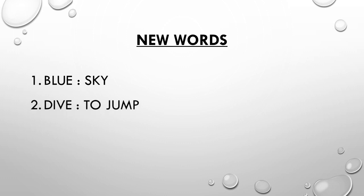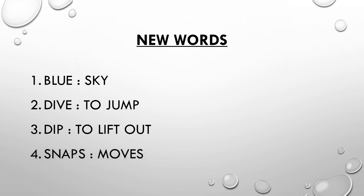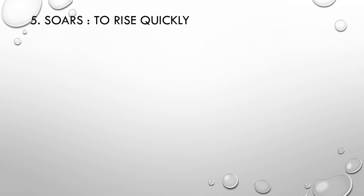New words: 1. Blue — means sky. 2. Dive — means to jump. 3. Dip — means to lift out or to go upward. 4. Snaps — here means moves; the string snaps, meaning it moves in the sky. 5. Soars — means to rise quickly. 6. Tides — means waves. There are tides in the sea and the ship moves over them; similarly the poet has compared tides to the movement of wind, meaning the wind speed in which the kite is flown.